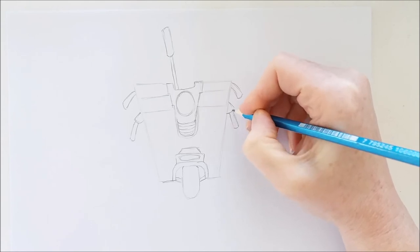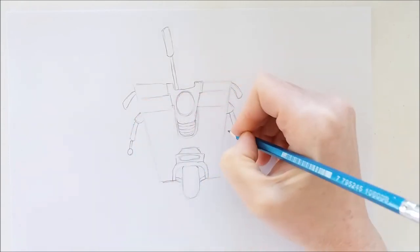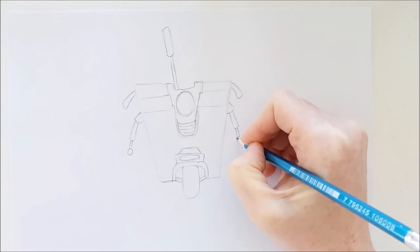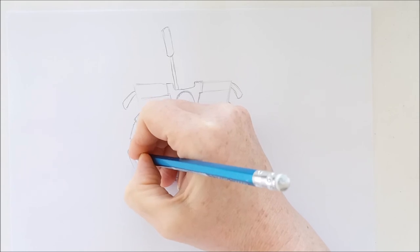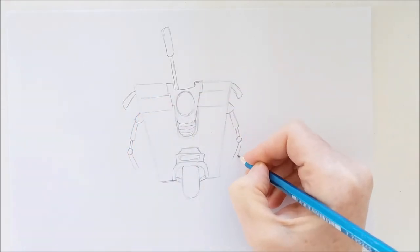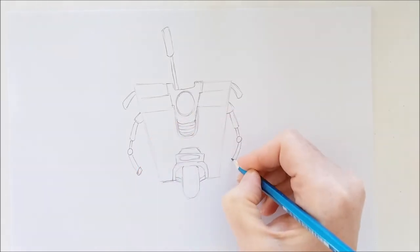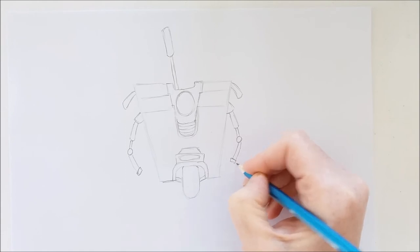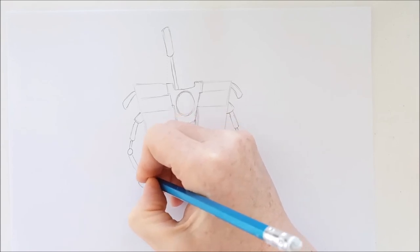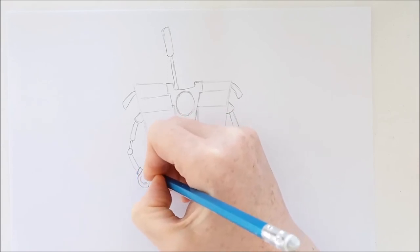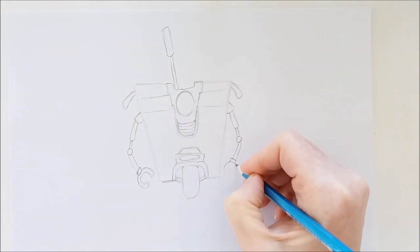Then I'm going to put in a very small rectangle with a circle on the end of it, and then one more rectangle here and over here, and then a little square on each arm. Then I'll draw a C shape for Claptrap's hands, and I'll do the same thing on this arm.